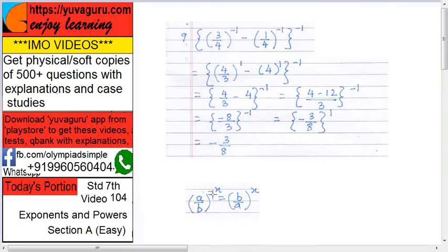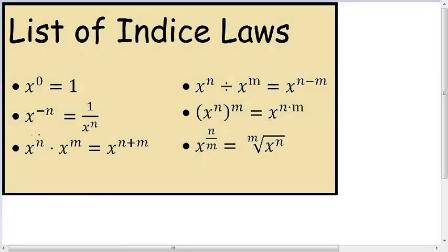A upon B raised to minus x will be equal to, reverse this, B upon A raised to x, this will become plus. This is similar to x raised to minus n equals to 1 upon x raised to n.